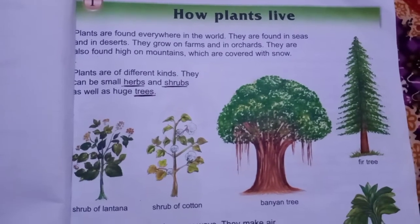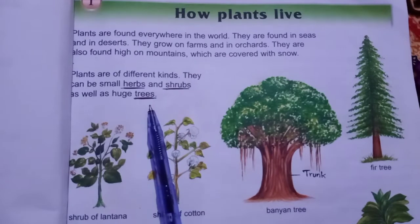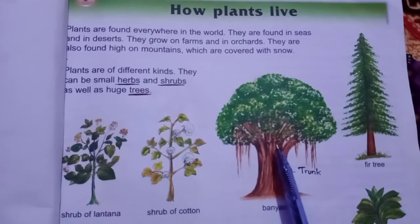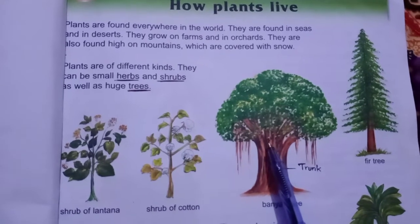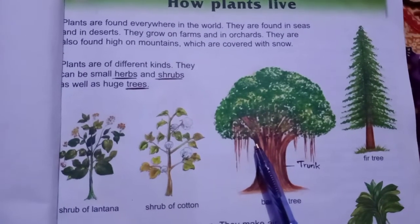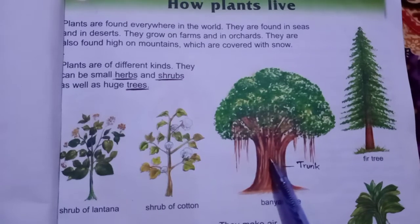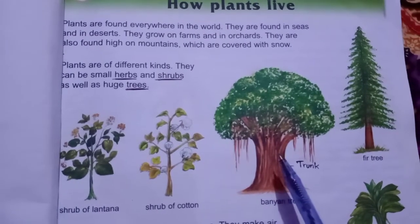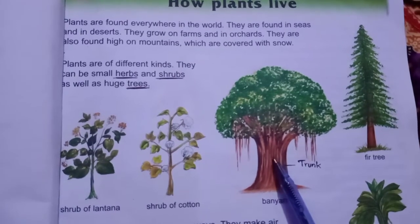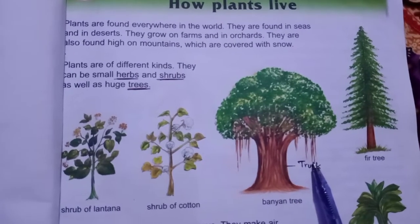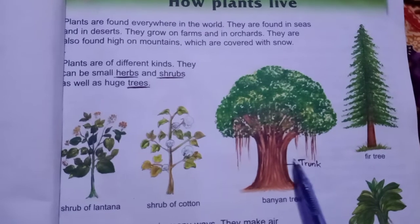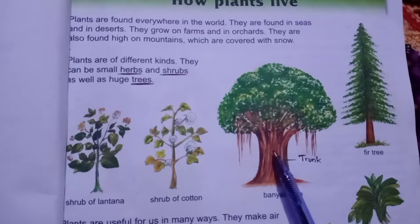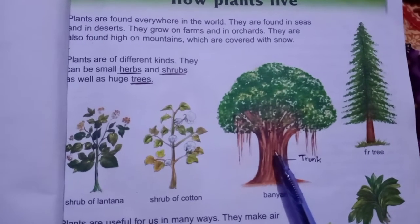Trees — tall and strong plants are trees. جو بہت لمبے، بڑے اور مضبوط plants ہوتے ہیں وہ trees کہلاتے ہیں۔ ان کا stem بہت thick، hard اور woody ہوتا ہے۔ اس stem کو ہم trunk کہتے ہیں۔ They have many branches. For example: banyan tree, fir tree, mango tree, etc.